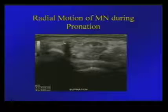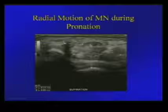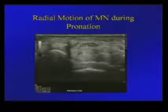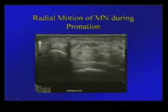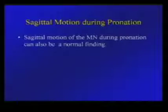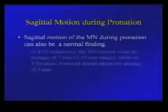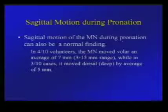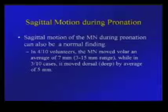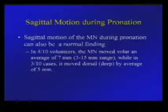Showing here in supination: the location of the median nerve relative to the capitate bone and the flexor carpi radialis. However, when you pronate the hand, the nerve in this patient moves towards the radial aspect of the wrist — a significant movement during pronation. There is also sagittal motion of the median nerve during pronation, and it can be a normal finding. In four out of ten volunteers, the median nerve moved toward the volar aspect, while in about three volunteers it moved toward the dorsal aspect — no real predilection, but it does move often during pronation.